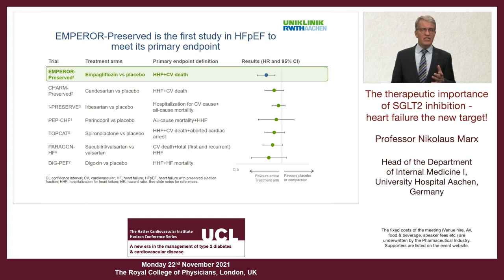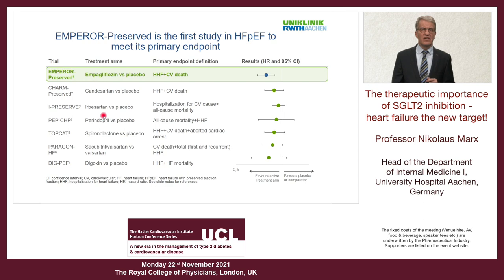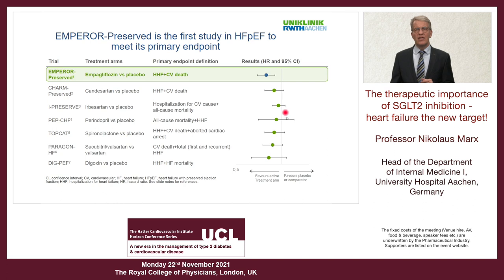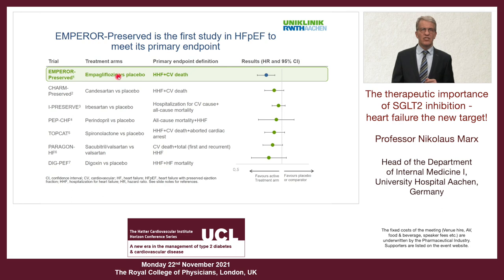Previously, we had no data showing improvement in endpoints in HFpEF patients — candesartan, ACE inhibitors, spironolactone, and even sacubitril/valsartan (Entresto) had been examined, with only trends that were not significant. This makes Emperor Preserved a landmark trial showing that an SGLT2 inhibitor — in this case empagliflozin — significantly reduced the primary endpoint, which is very important for the treatment of HFpEF patients.